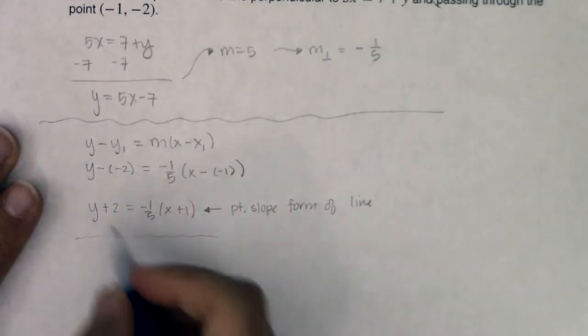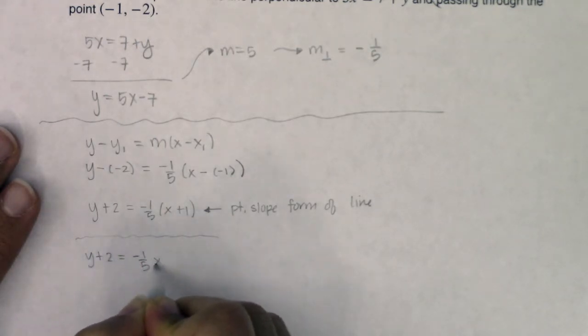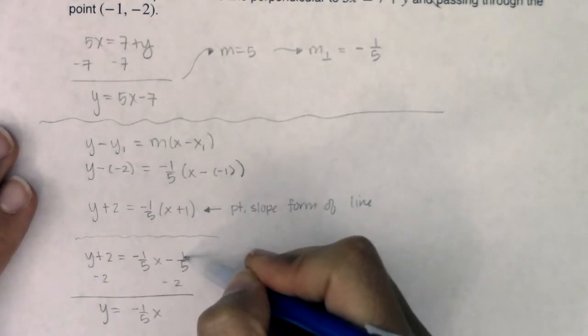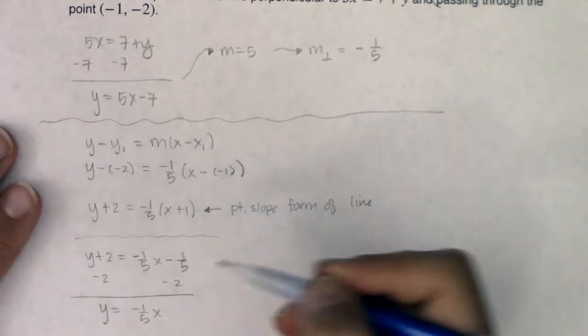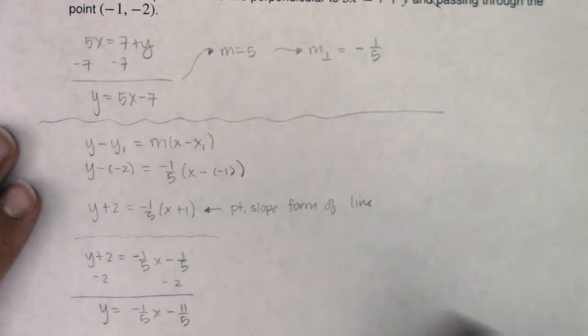So if you wanted to keep on going, you could distribute the negative 1 5th on the right side. And I would get y plus 2 equaling negative 1 5th x minus 1 5th. I could subtract 2 from both sides. And I would get y equaling negative 1 5th x. Well, if you have negative 1 5th and you lose 2, you basically have negative 2 and 1 5th. And if I want to rewrite negative 2 and 1 5th as an improper fraction, that would be negative 11 5ths.